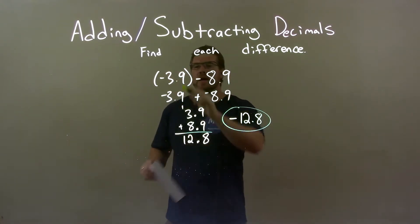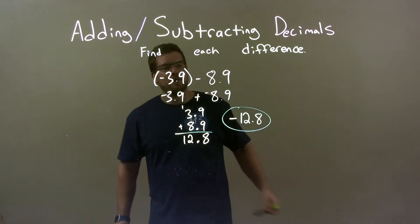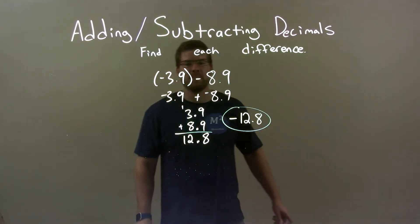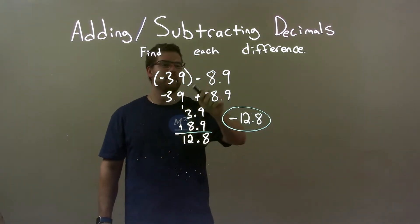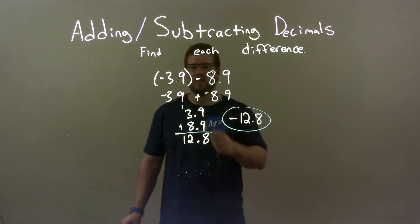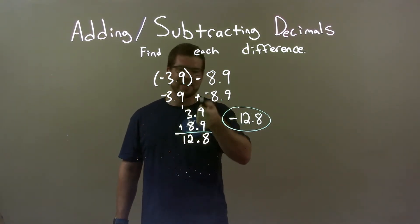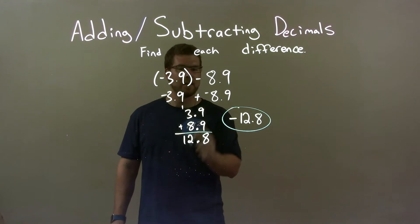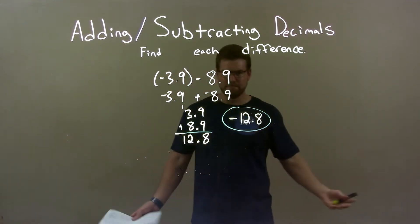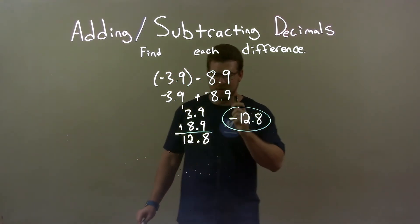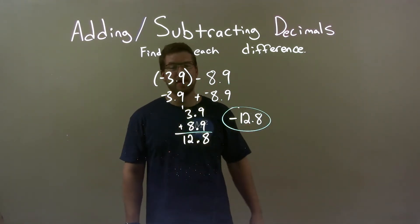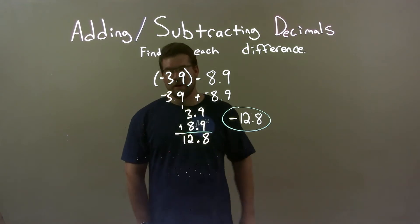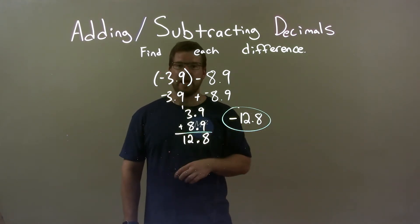Quick recap: we were given negative 3.9 and we're subtracting 8.9 from that. We knew that subtraction is the same thing as adding a negative. Then I just treated it like an addition problem with positive numbers. It gave me 12.8, but I knew the final answer had to be negative — a negative and a negative added together is a negative. So our final answer is negative 12.8.